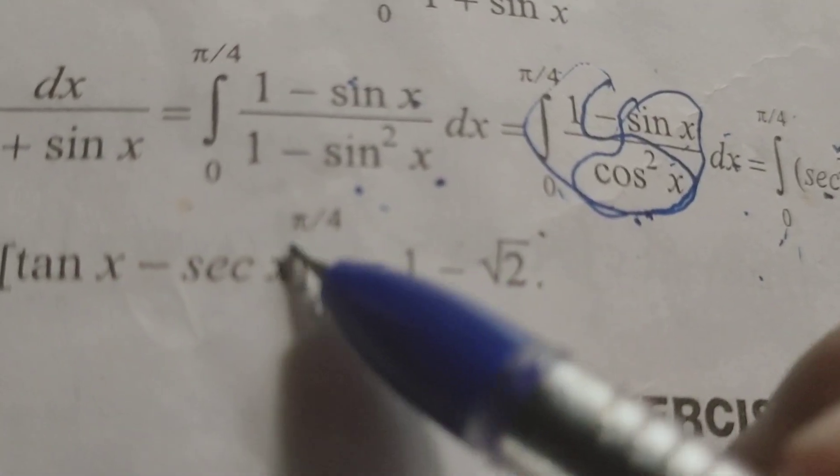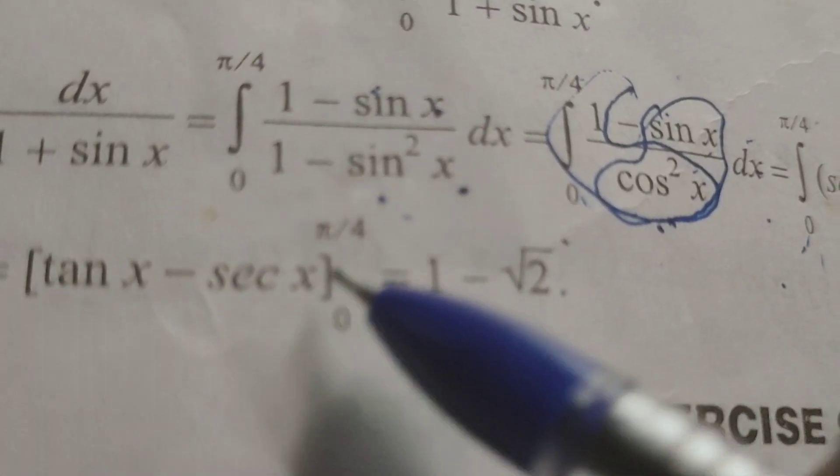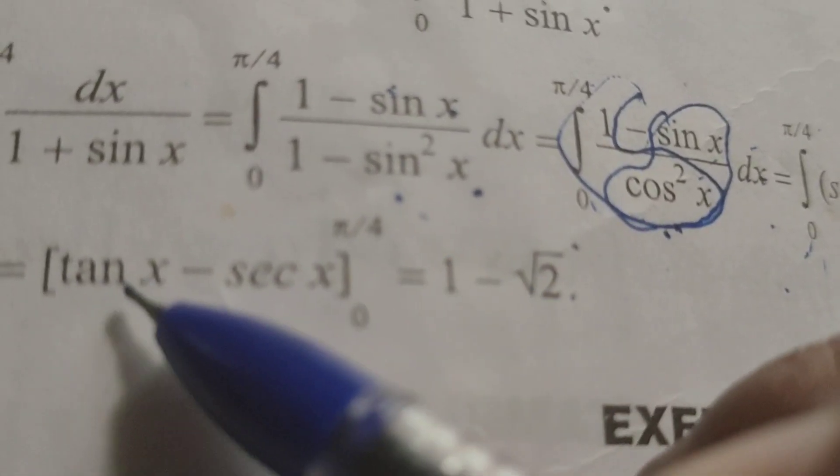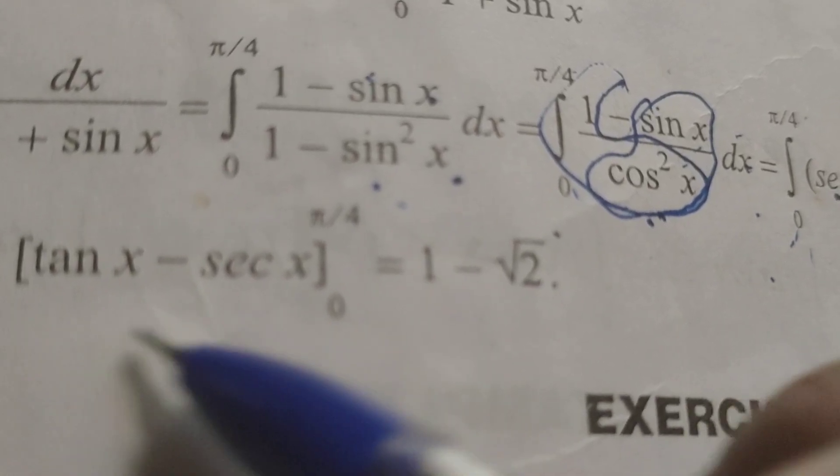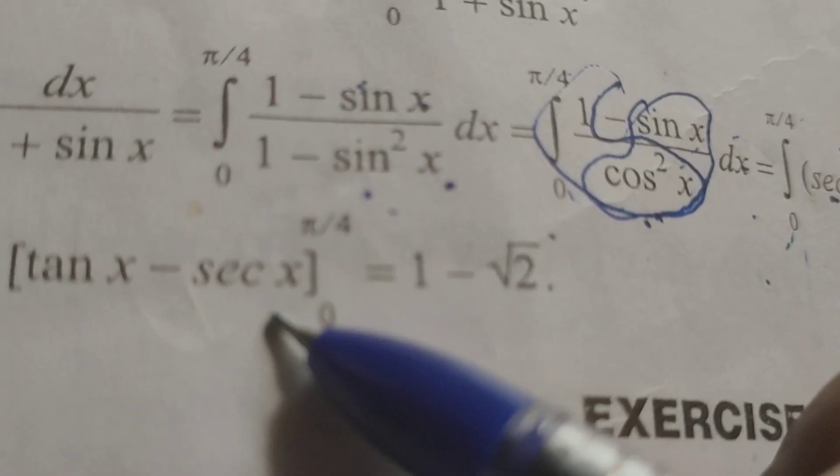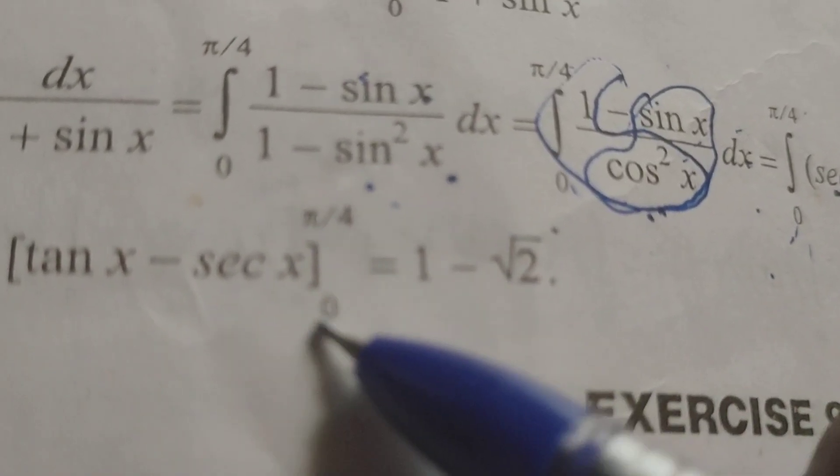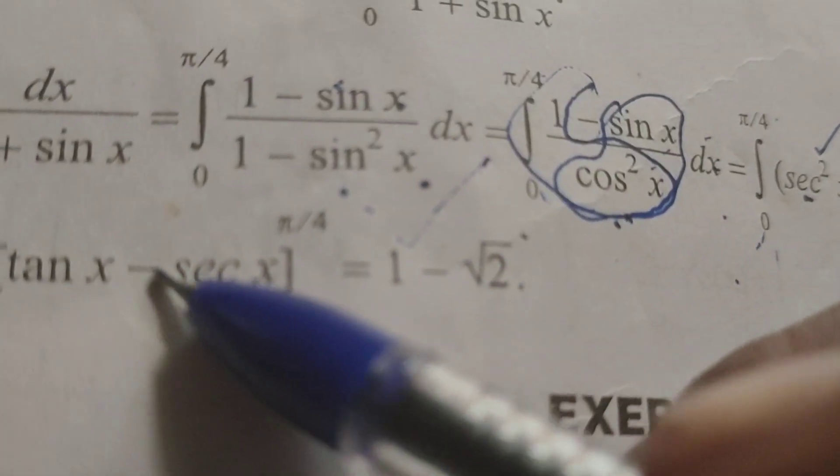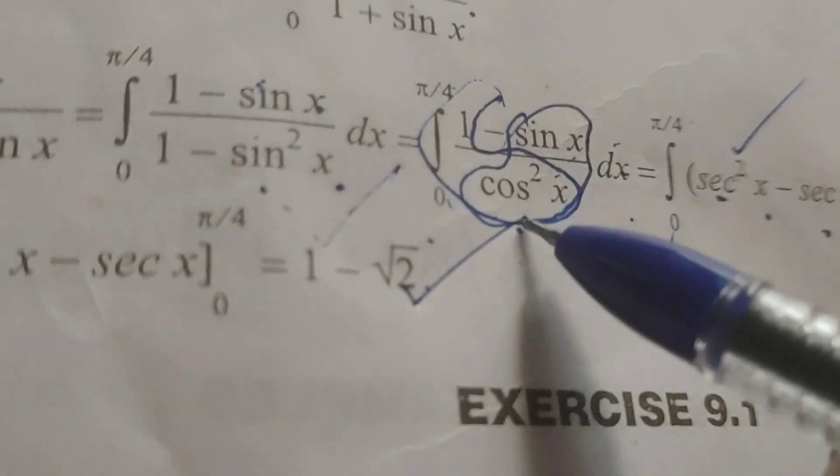Here first of all substitute upper limit in place of x and minus the lower limit 0. So tan pi by 4 minus tan 0 minus secant pi by 4 minus secant 0. Tan pi by 4 is 1, and secant pi by 4 is root 2.